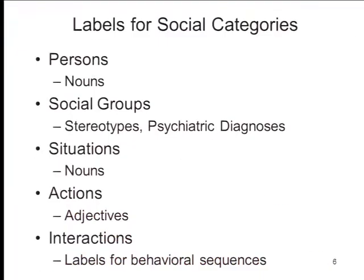Mental representations of categories are usually labeled linguistically by some kind of word, and we have special kinds of labels for these categories. Categories of persons are generally labeled by nouns — we call somebody a preppy, a jock, a wonk, a nerd, an extrovert. Categories of social groups are represented by social stereotypes or even psychiatric diagnoses — if I say 'he's a schizophrenic,' that's a categorization. Situations are also labeled by nouns: parties, funerals, weddings. Actions are generally labeled by adjectives, specifically trait adjectives — an extroverted behavior, a conscientious behavior. The whole vocabulary of personality traits is a set of conceptual labels by which we categorize kinds of behaviors. And finally we have categories of social interactions, whole sequences of behavior often labeled in terms of scripts.